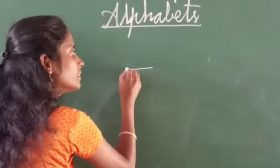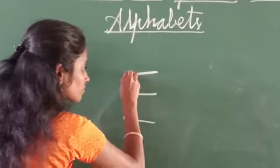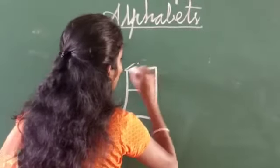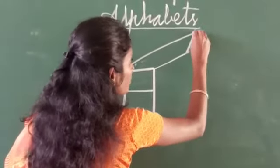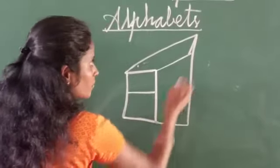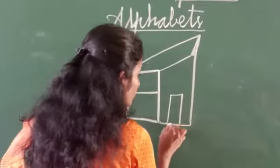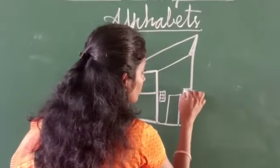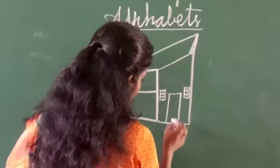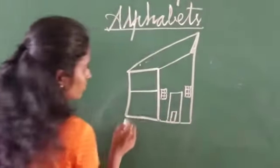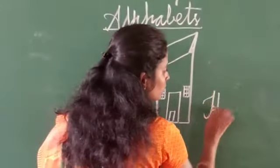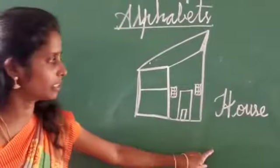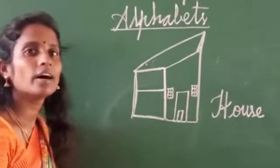Yes, we go to alphabet E. It is house. We are living here. We are living here. It is house. Next we go to alphabet F.